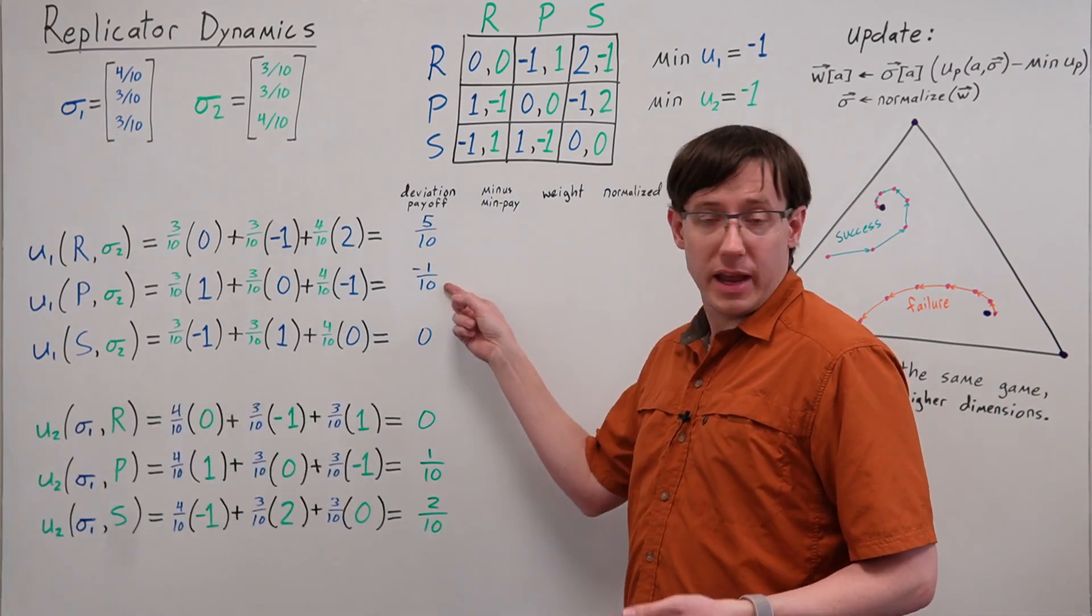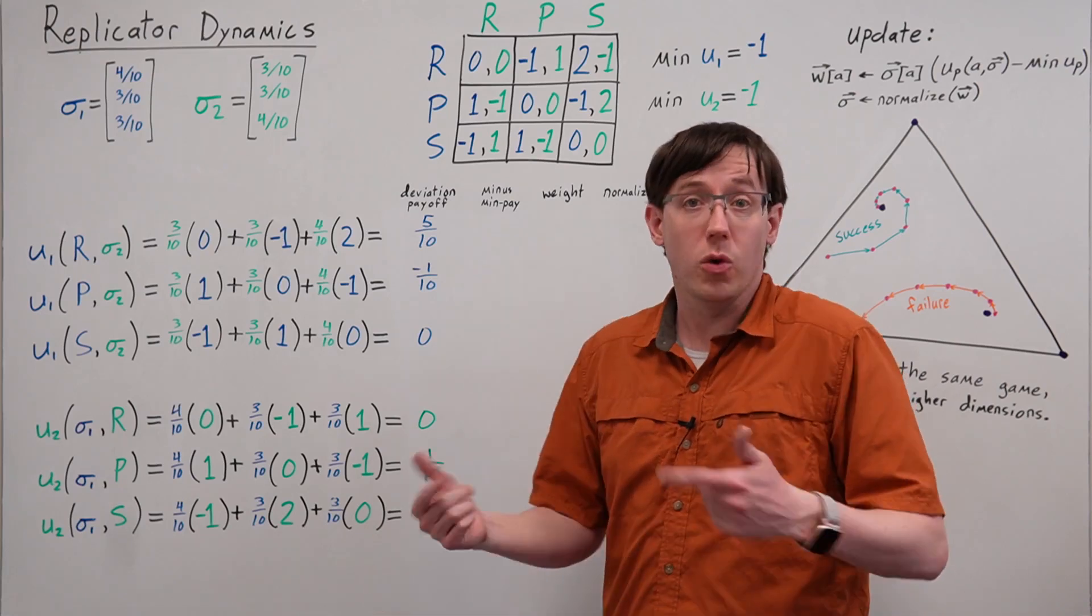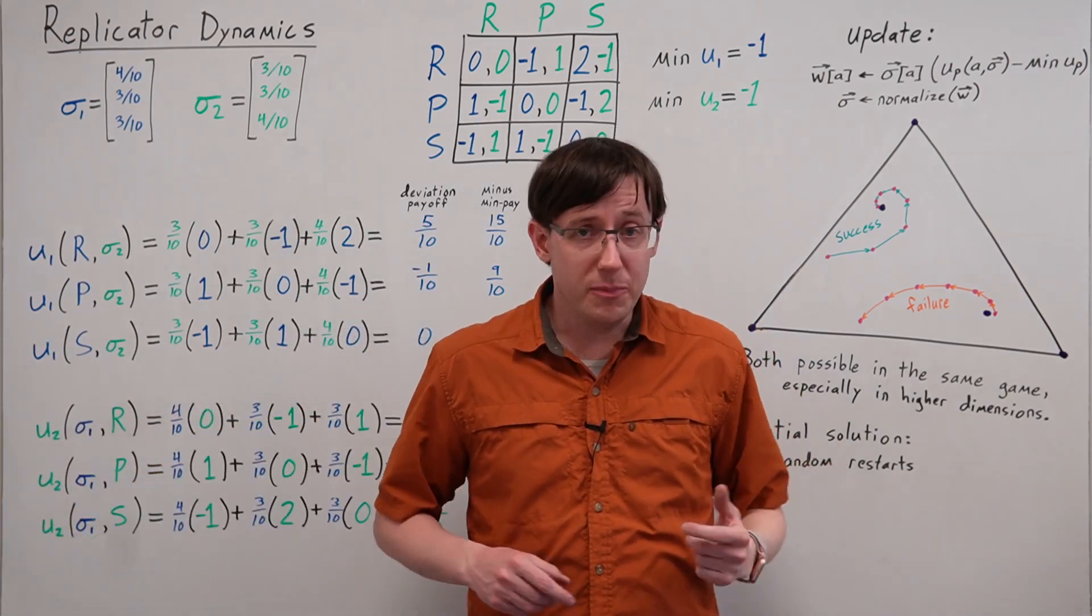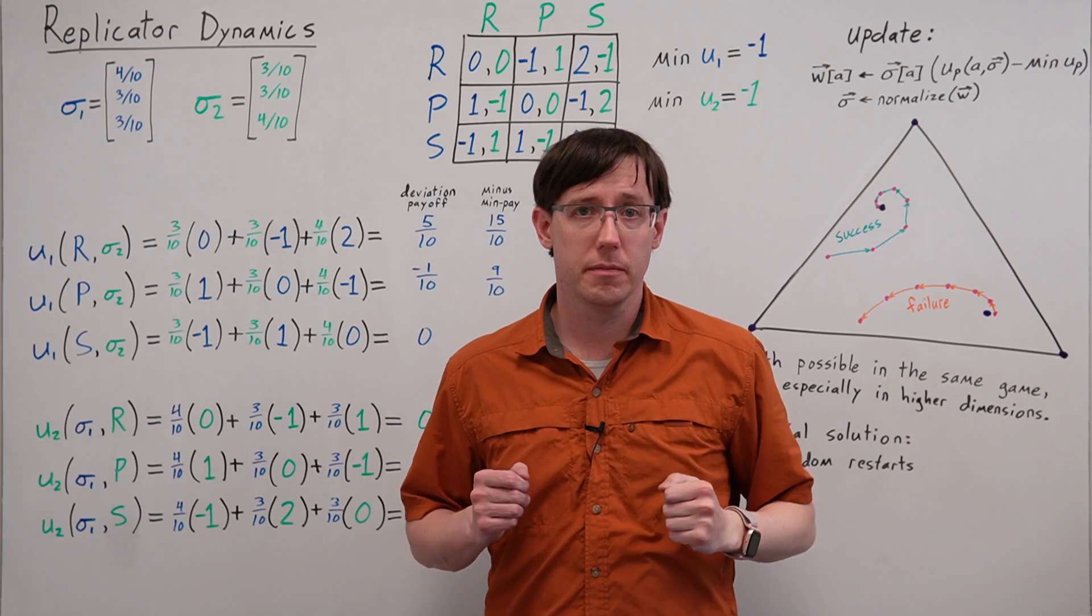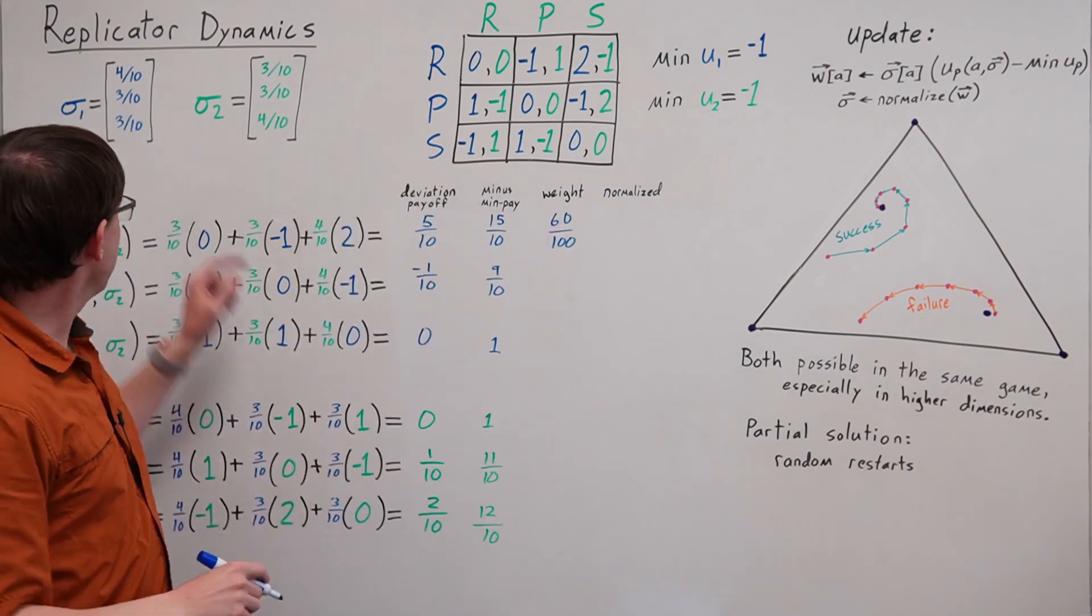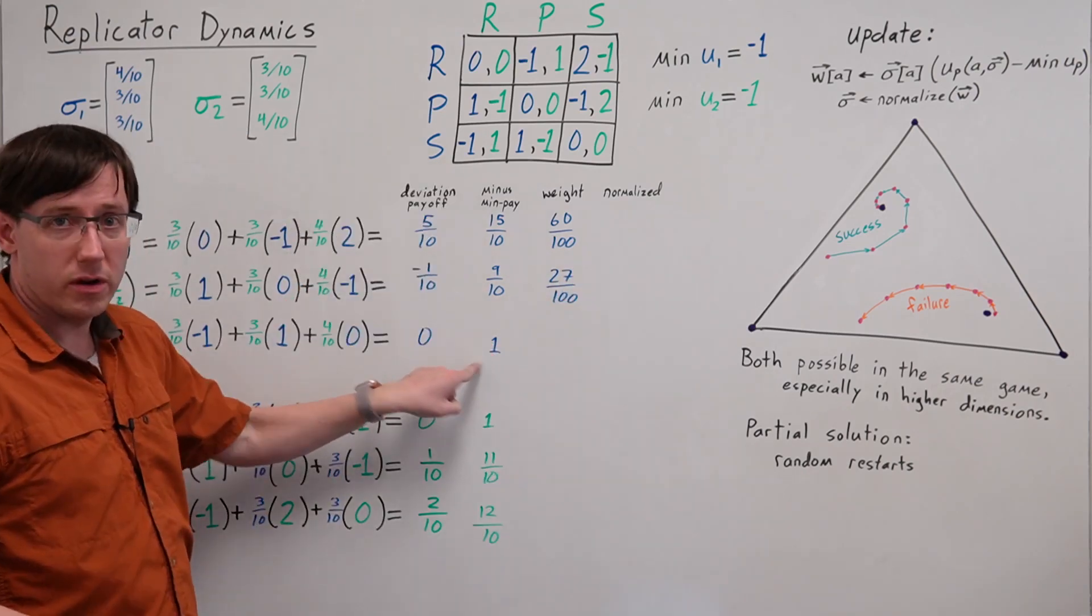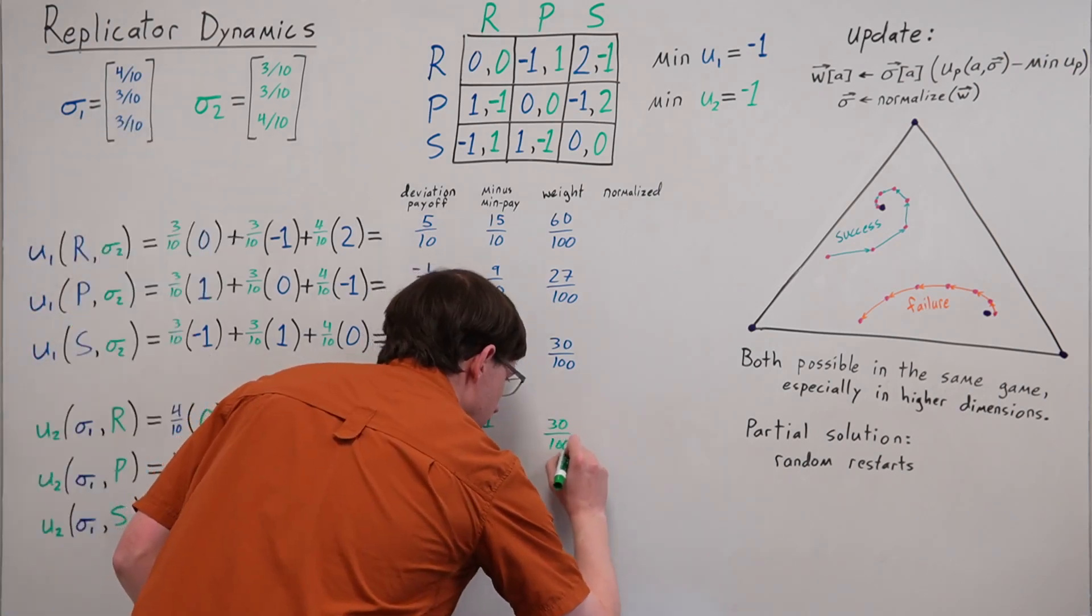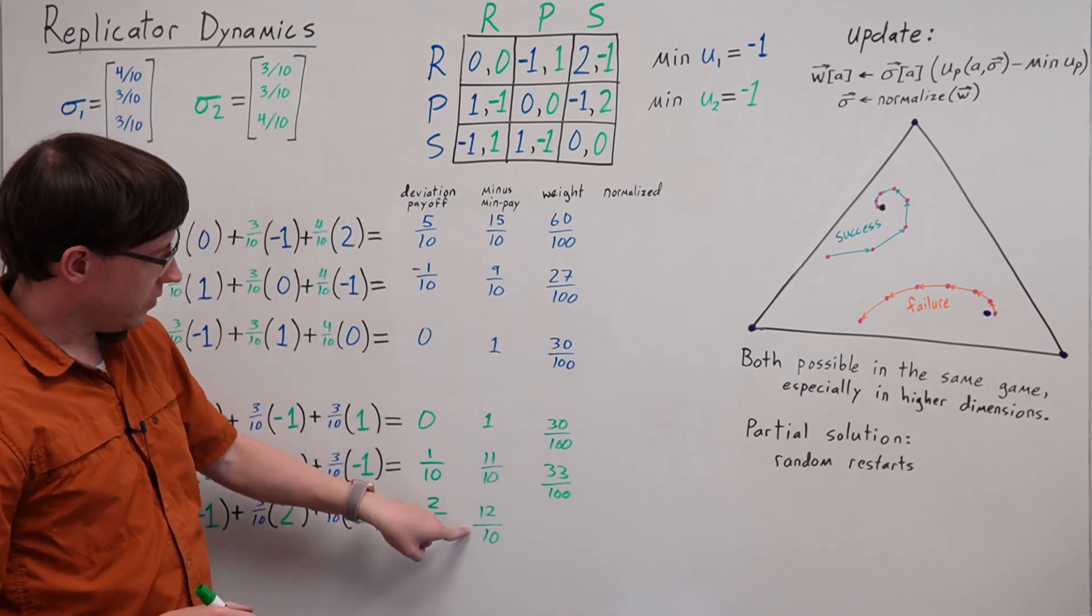Here's a case where we ended up with a negative deviation payoff, so we are glad to be subtracting off the minimum payoff to ensure we get only positive multipliers. Now to perform our update, we need to multiply these adjusted deviation payoffs by the probabilities from our mixed strategy profile. For player 1's first action, we get four-tenths times fifteen-tenths. For the second action, we get three-tenths times nine-tenths. For the last one, we get thirty over a hundred. For player 2's first action, we again get three-tenths. For their second action, we get three-tenths times eleven-tenths. For their last action, we get four-tenths times twelve-tenths.